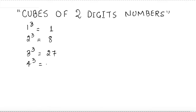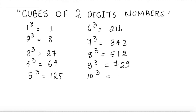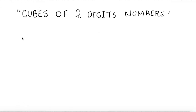I'm writing these for your knowledge, from 1 to 10: 1³ = 1, 2³ = 8, 3³ = 27, 4³ = 64, 5³ = 125, 6³ = 216, 7³ = 343, 8³ = 512, 9³ = 729, and 10³ = 1000. These 10 cubes you should remember.